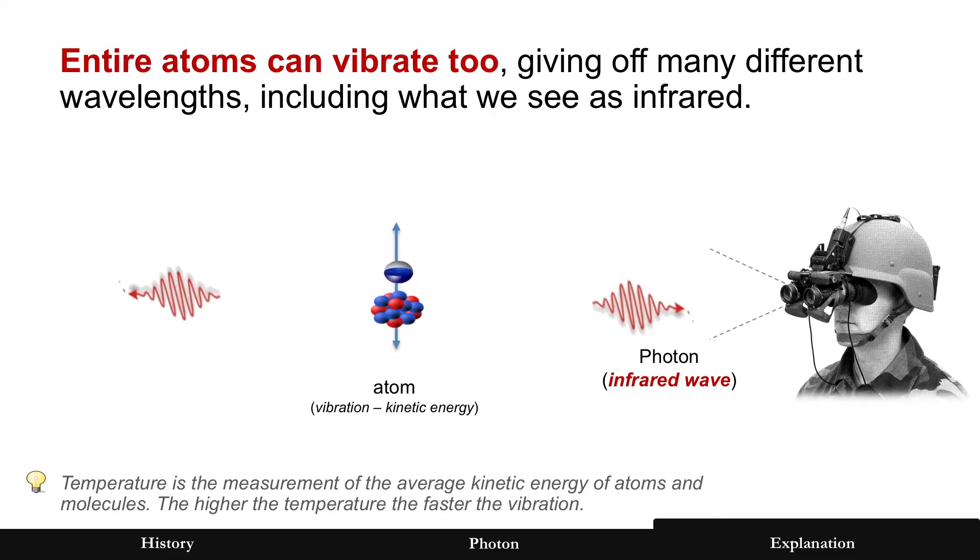If you're heating up something like a frying pan and it gets hot enough, it goes beyond infrared and starts to turn red, now in the visible wavelength we can see. Temperature is simply a measurement of the average kinetic energy, how fast these atoms are vibrating. The faster the vibration, the shorter the wavelength.